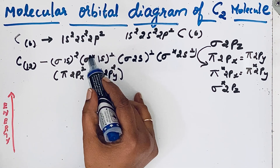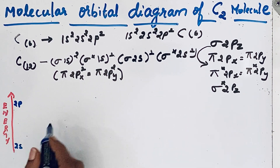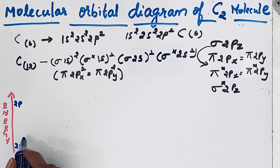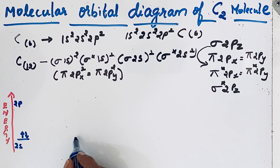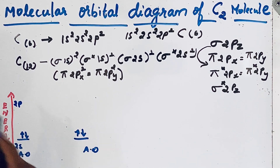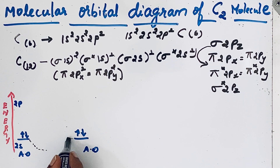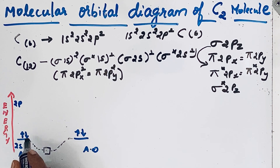Here we are going to show only the 2s and 2p orbitals, not the 1s orbital. In the 2s orbital, each carbon atom has two electrons — two electrons for one carbon atom and two electrons for the other. These are the atomic orbitals. When these atomic orbitals combine, they form molecular orbitals: a low energy bonding molecular orbital and a high energy anti-bonding molecular orbital.